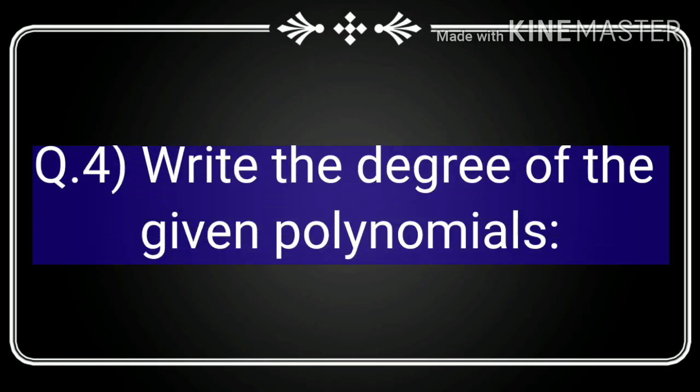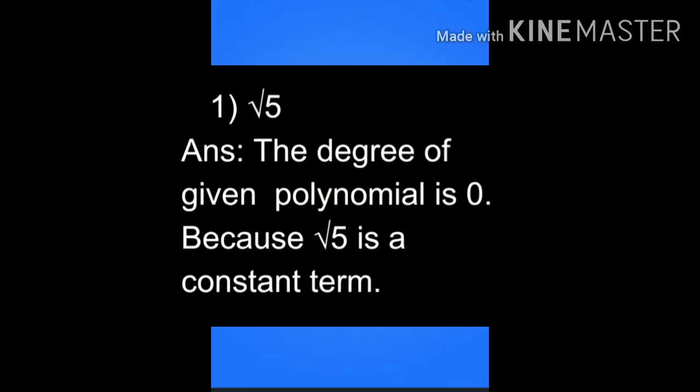Now Question 4: write the degree of the given polynomials. Question 1: √5. Root 5 is a constant polynomial; the degree of a constant is always 0. So the degree of the given polynomial is 0 because root 5 is a constant term.